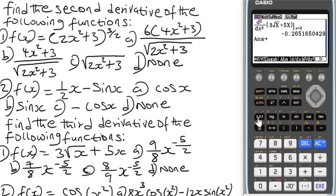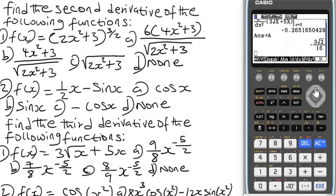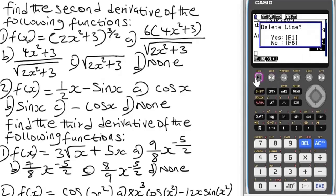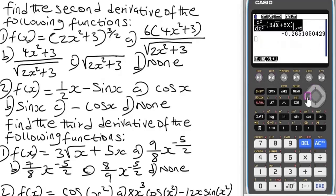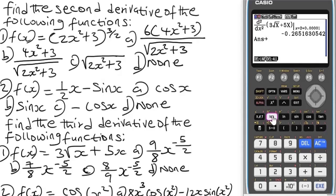Store this value as A on the calculator: press the arrow button, then Alpha A, then EXE. It indicates the value is stored as A. Now delete the first line — very important — then go up using the navigation button and add a small constant to the input: plus 0.000001 (five zeros). Press EXE. We get another value. Store this as B: press the arrow button, then Alpha B, press EXE.